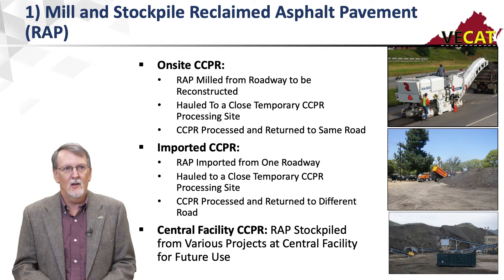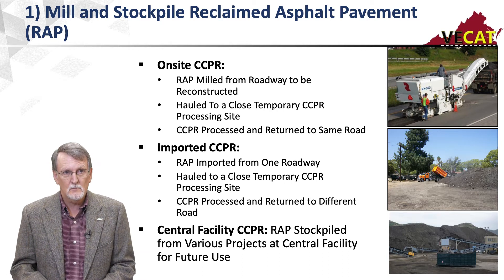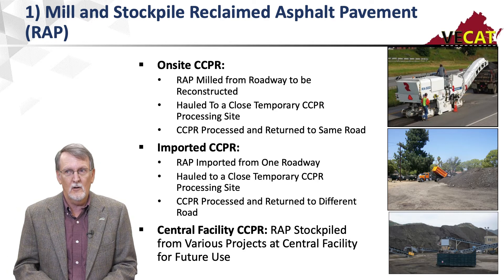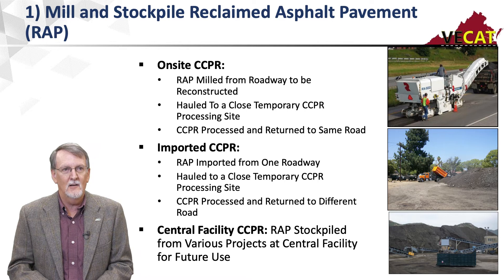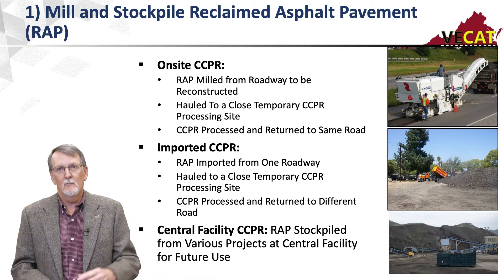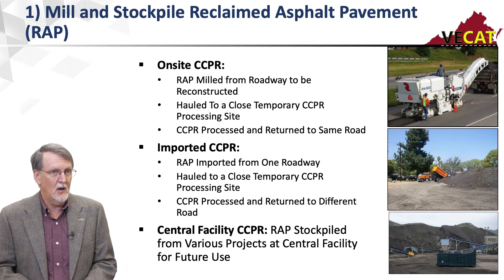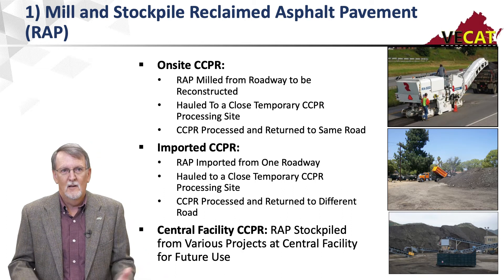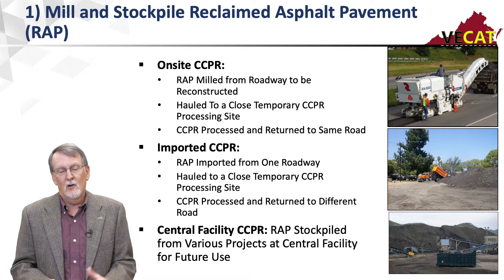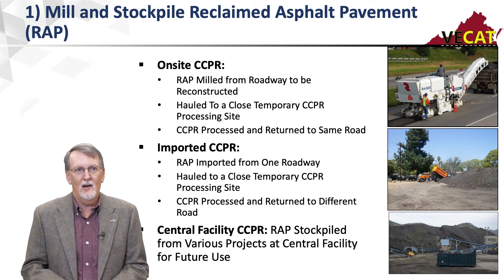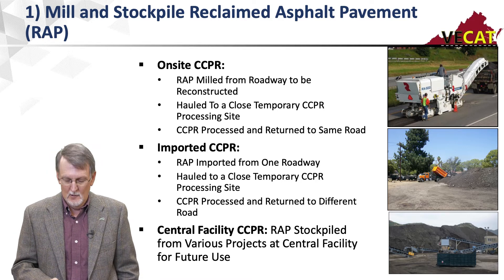The nice thing about on-site and imported CCPR is you're using a single-source RAP. But by far the most common is central facility CCPR, where RAP from various projects is stockpiled at a central facility, a plant is brought in, and the mix is processed and taken to various projects. For sizing the RAP, if it came from a single source recently, you may only need to run it over a scalping screen — typically about an inch and a half maximum — over the feed hopper of the cold recycling plant. Otherwise it may need to be crushed and screened, typically to an inch to inch-and-a-half maximum, though I've seen it crushed down to half inch.